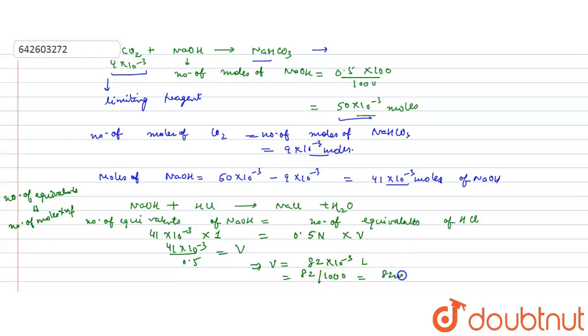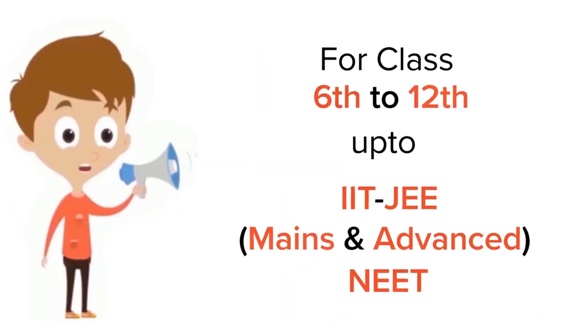Converting from litres to millilitres, 82 × 10⁻³ litres equals 82 mL. Therefore, 82 mL of 0.5 molar HCl is required to neutralize the resulting solution and reach the endpoint.